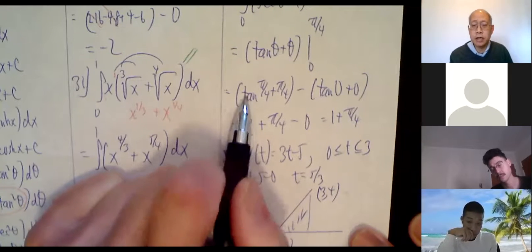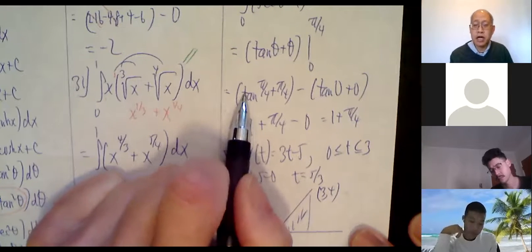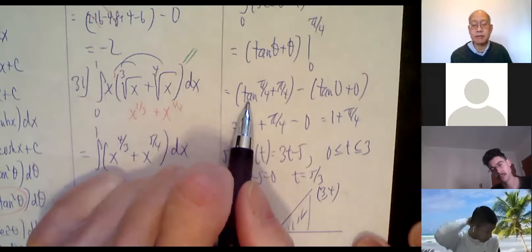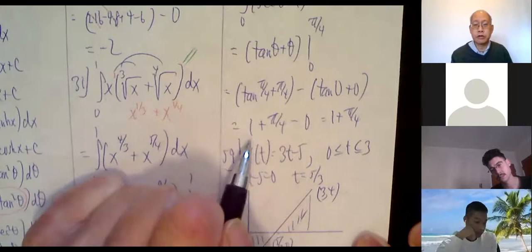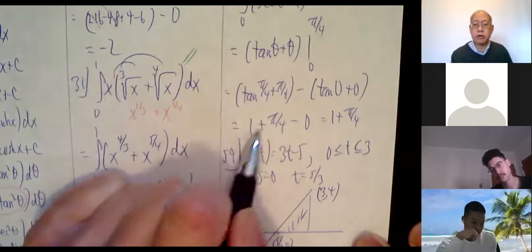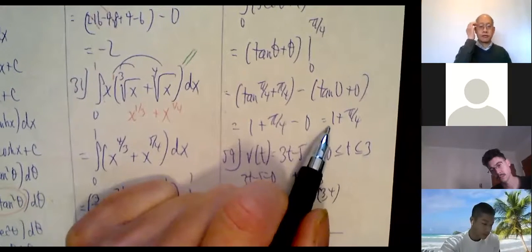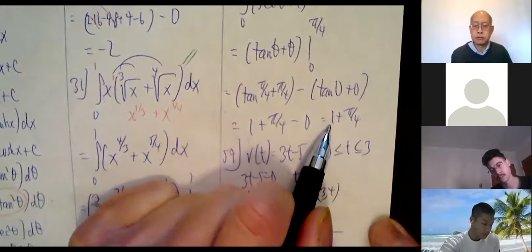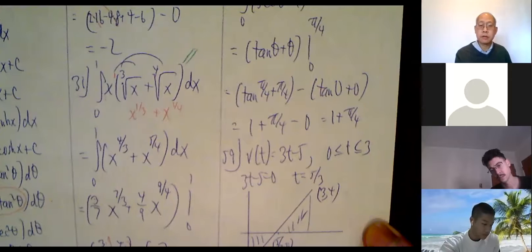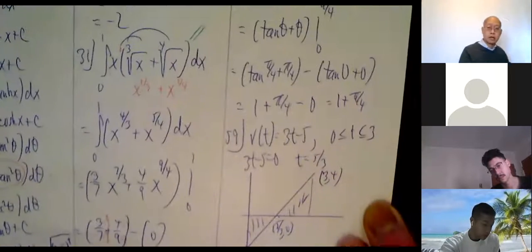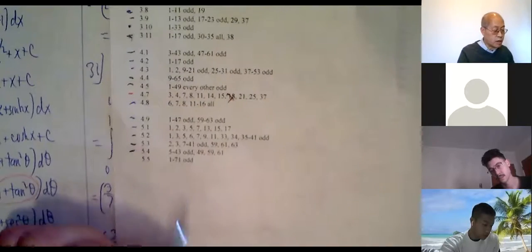Tangent of π/4 equals 1 because sine and cosine of π/4 are both √2/2, so their ratio is 1. The final answer is 1 plus π/4.